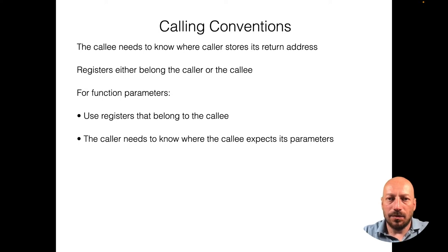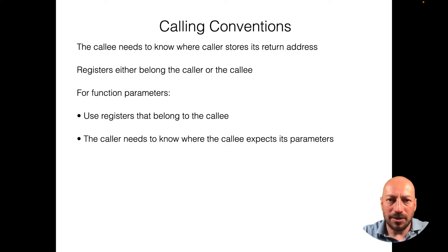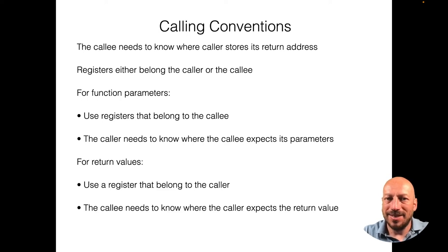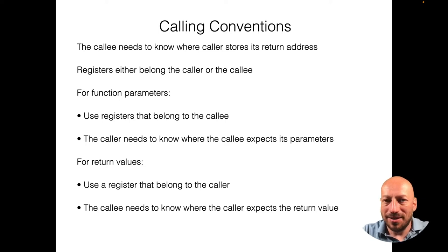The caller needs to know how many parameters are expected by the callee and which parameter should be in which register — making a kind of contract between the two. For returning a value, the register containing the return value belongs to the caller, and the callee needs to know what register is expected to contain this return value. I'll show you in another demo how these two can agree on such things.